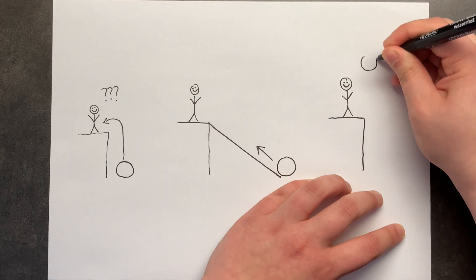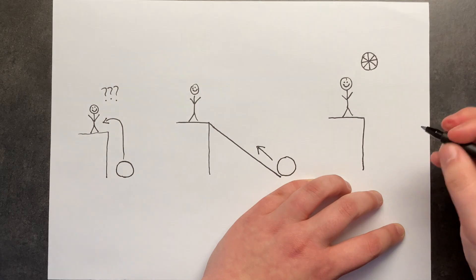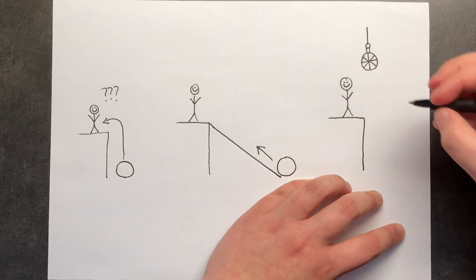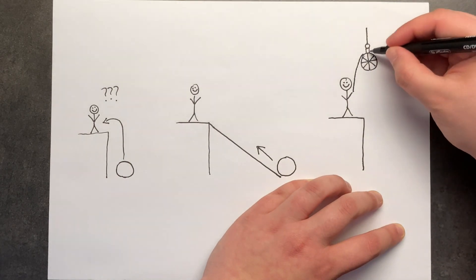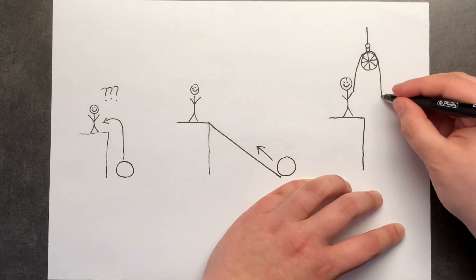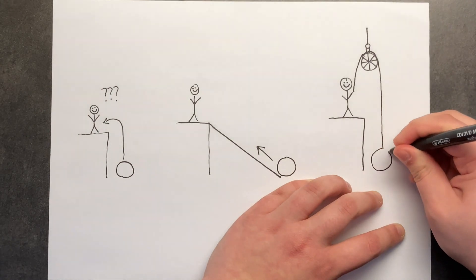So you have your pulley wheel here and it is attached higher up like so. And then there is a very sturdy rope that goes around the pulley wheel down to where your heavy load is.